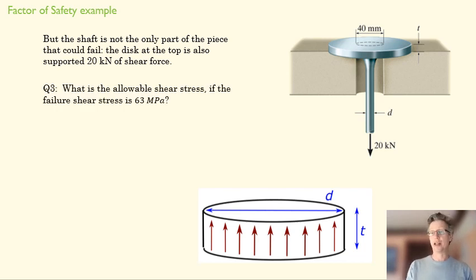And we want to figure out how thick we need to make that disc to resist that shear force. So first, we'll just start with allowable shear force. What's our allowable shear force if the failure stress is 63 megapascals and the factor of safety is still 1.8? So go ahead and answer that one.